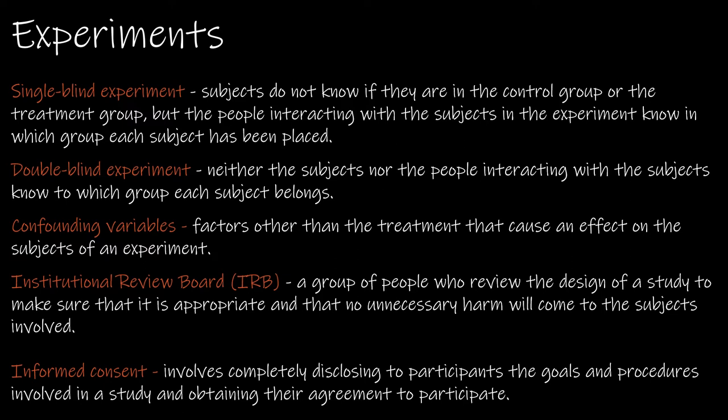Blinding in an experiment involves keeping information from either the subjects or both the subjects and the people interacting with them. A single-blind experiment is where the subjects don't know if they're in the control or treatment group, but the people conducting the study do. A double-blind experiment is when neither the subjects nor the people who interact with them know which group each subject belongs to.